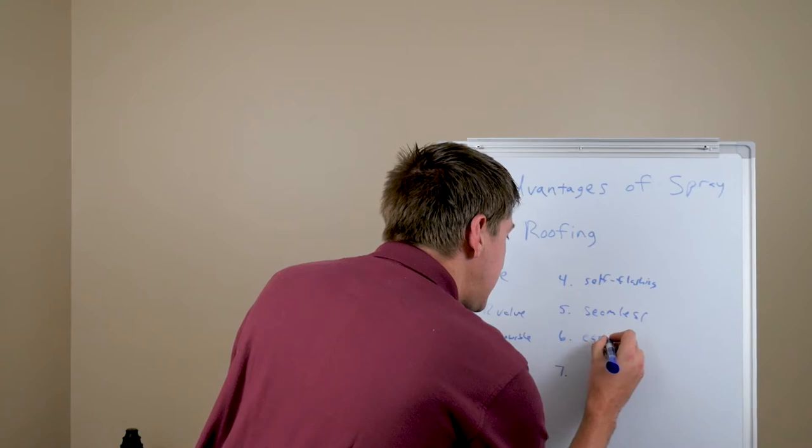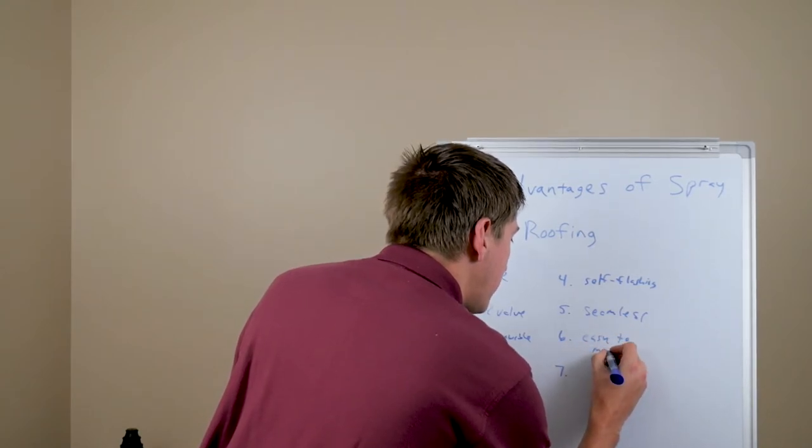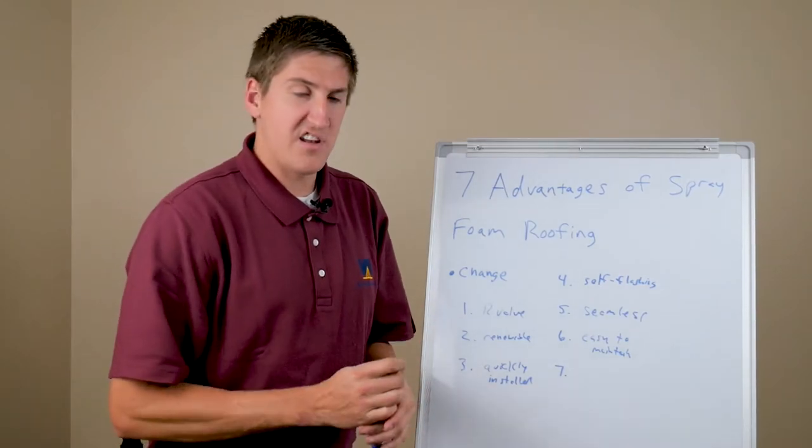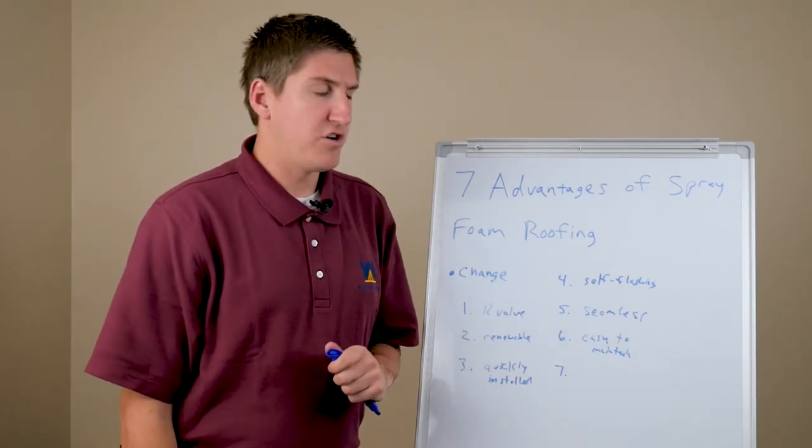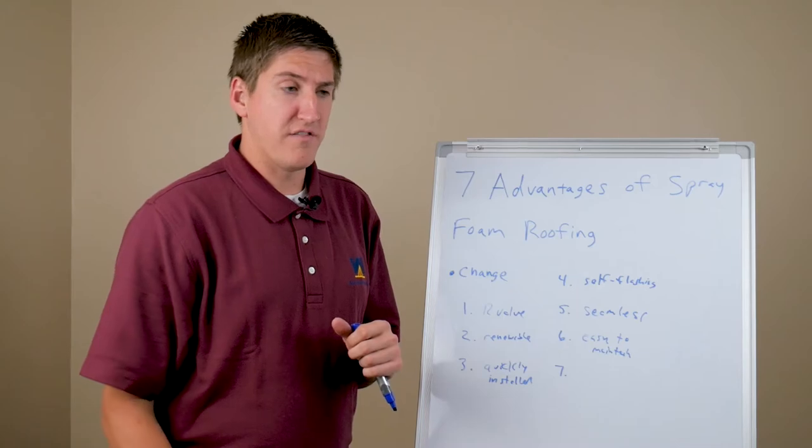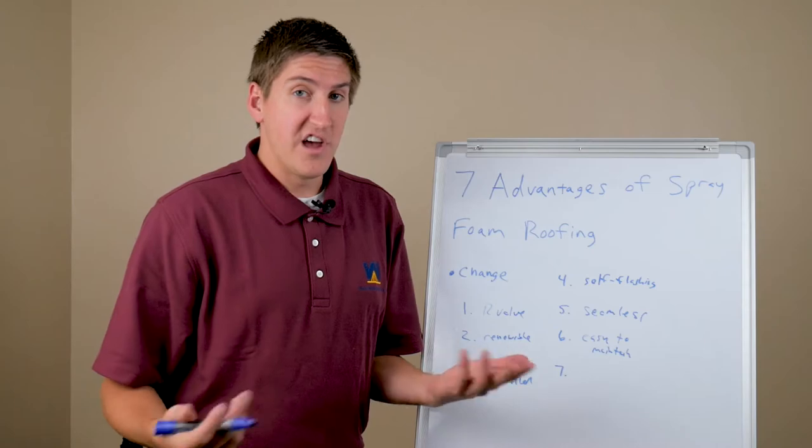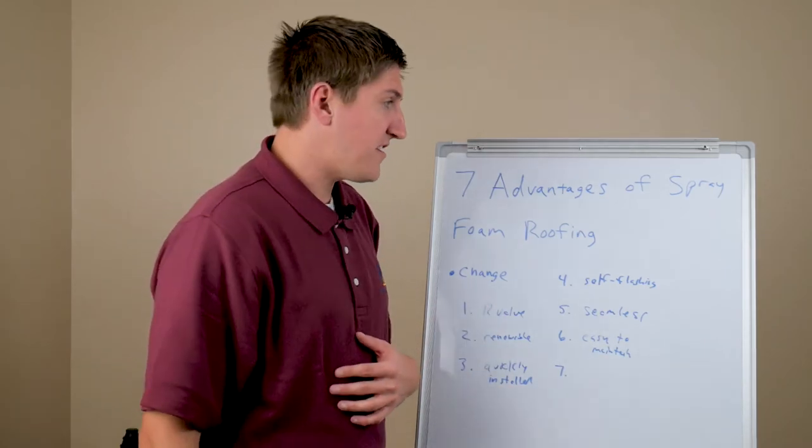Next thing is that it's easy to maintain. So sometimes a spray foam roof will have little cuts in it from hail or whatever it could be. But pretty much you just cut out the defective area, dry it, then put caulk in it, smooth it out, and then you're good to go. So very easy for anybody to maintain it throughout its lifetime.